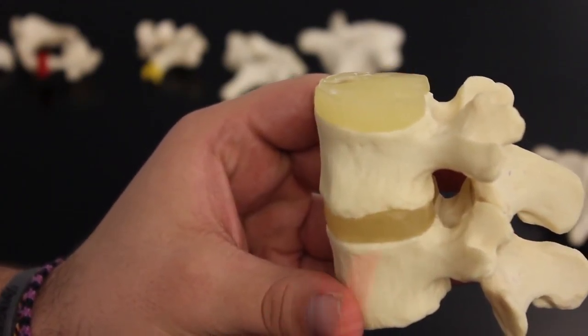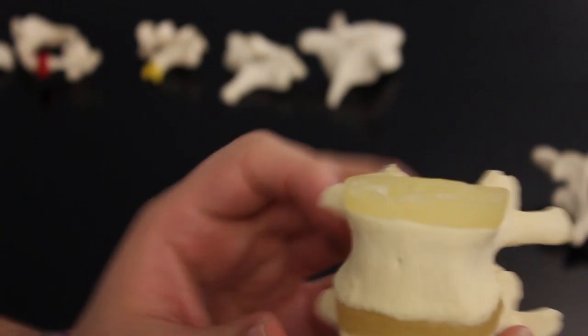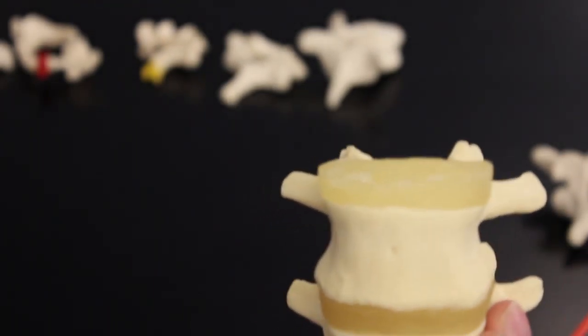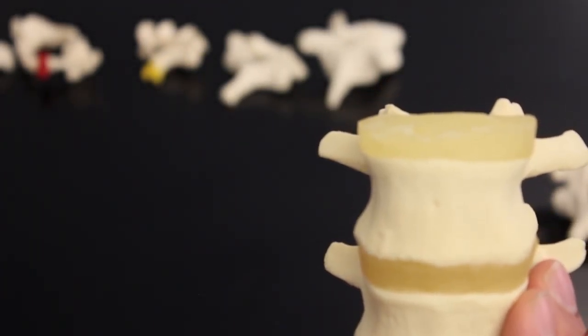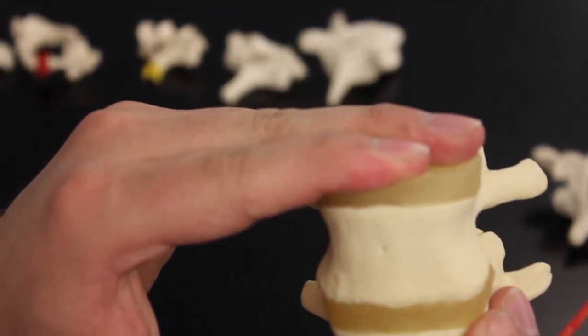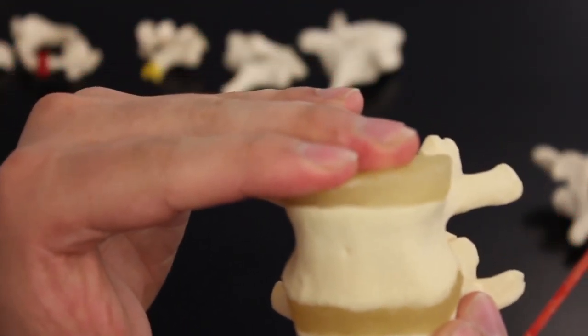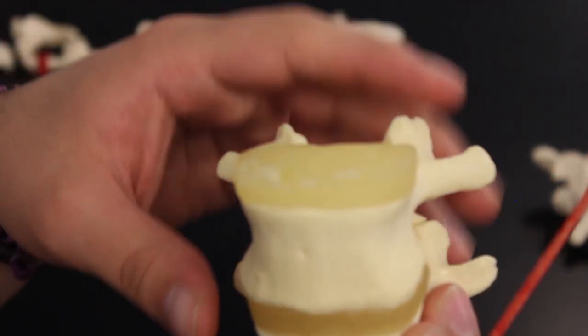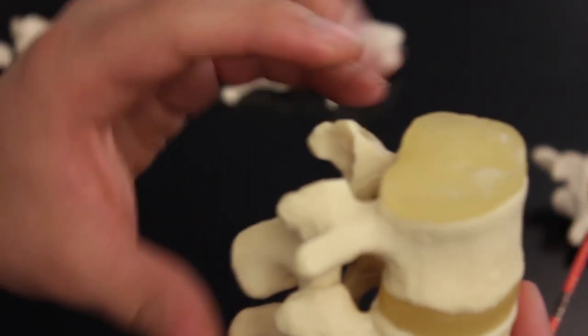And then inside of it you have a little gel thing called the nucleus pulposus. These are basically designed to be a shock absorber and to act as a cushion, so whenever the vertebrae is being compressed, it helps allow for that compression to occur. One other thing I wanted to show you right here -